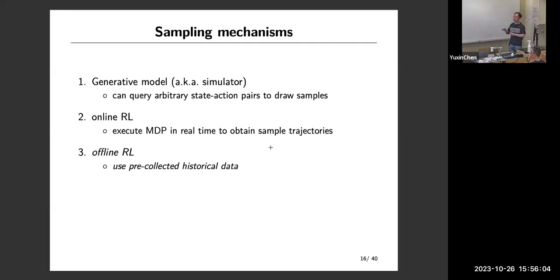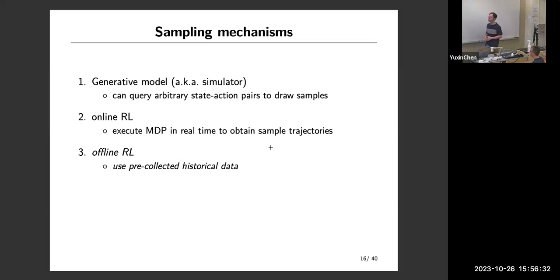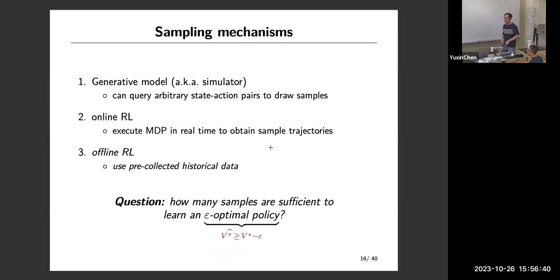There's a final thing I'm not going to talk about today: offline reinforcement learning, where you are not allowed to take real-time samples but have access to a large historical dataset and must leverage it to transfer useful information to a new task. There could also be arbitrary combinations of these three. The question I'm interested in is: for each sampling mechanism, how many samples are needed to learn an epsilon-optimal policy — meaning a policy pi-hat such that the resulting value function is at most epsilon away from the optimal?